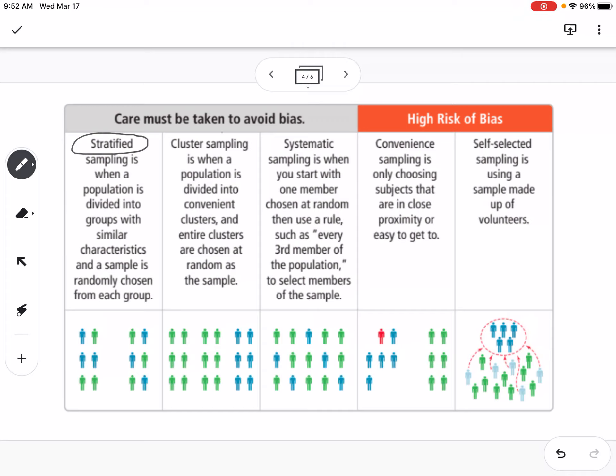Then we have cluster sampling, where a population is divided into convenient clusters, and then entire clusters are chosen at random as the sample. And then systematic sampling is where you start with one member chosen at random, and then you use a rule, like every third member gets sampled.